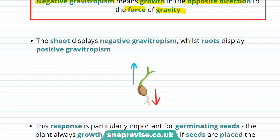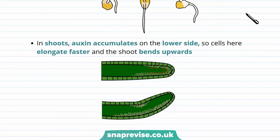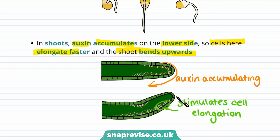Like phototropism, gravitropism is also really important to plants. It's particularly important for germinating seeds, ensuring the plant always grows the right way up even if seeds are placed the wrong way up. In shoots, auxin accumulates on the lower side, so cells there elongate faster and the shoot bends upwards — in the opposite direction to the force of gravity.